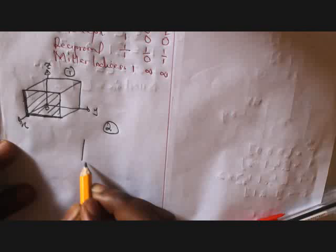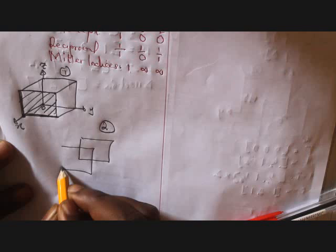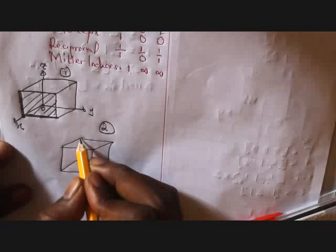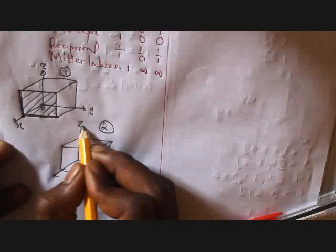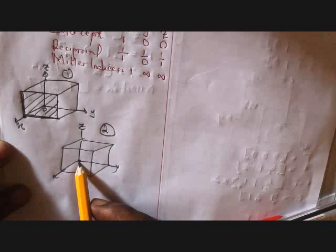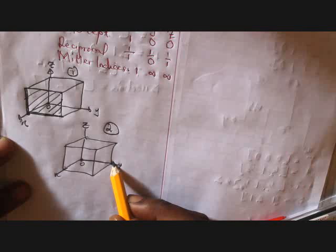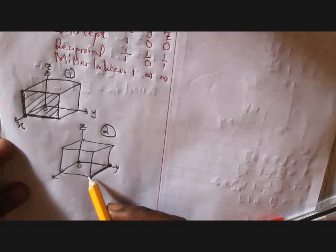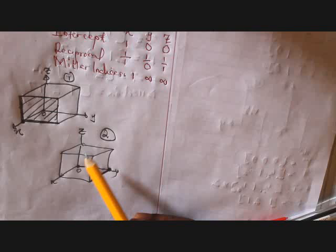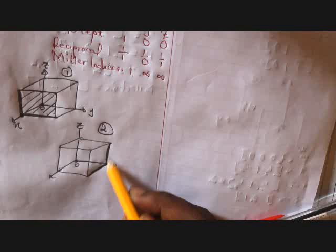This is the answer for number one. For number two: the Miller indices are (010). Here x is infinity, y is 1, and z is infinity. Since x is infinity, take the parallel of it, and z is infinity so take the parallel of it as well. The Miller plane will be constructed here.